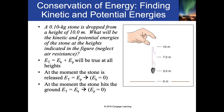Let's say we have a stone that's 0.1 kilograms, dropped from a height of 10 meters. At the moment the stone is released, the kinetic energy is actually zero because the stone hasn't moved yet. When the stone hits the ground, it's not moving anymore, so the potential energy is zero because there's no longer any height. You have to have height to have potential energy, and you have to have movement to have kinetic energy.